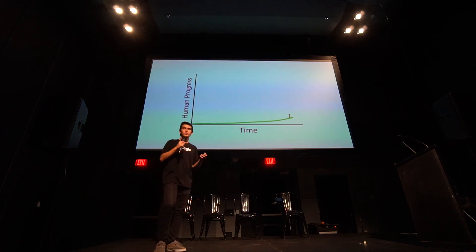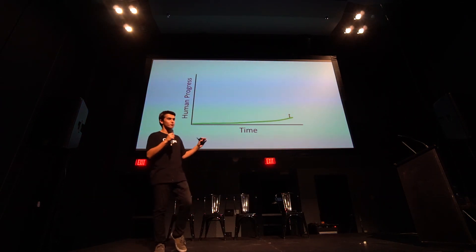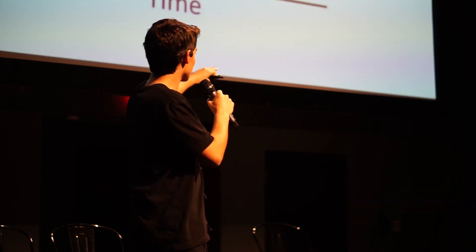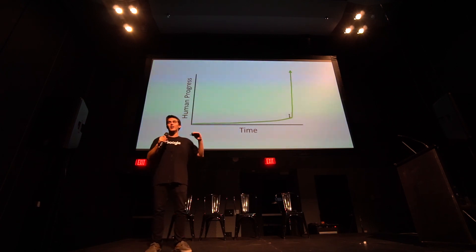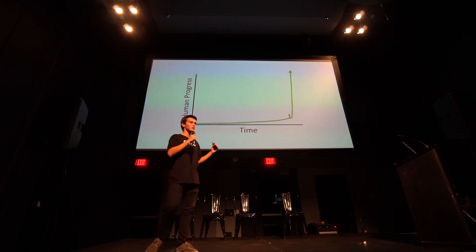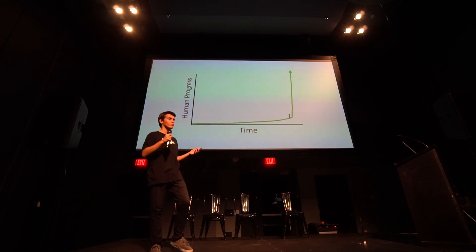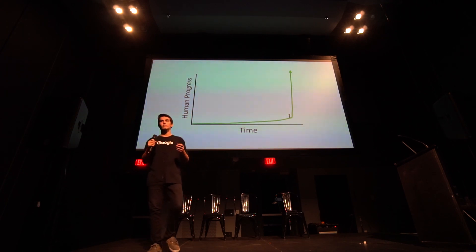The last thing I want to leave you with is this picture right here. While I talked about some cool technologies in computer vision, I really want you to take away the magnitude of the changes that are about to happen in the next five to 20 years. Here's what human progress over time looks like right now — and what's about to happen is this. You should be excited and absolutely terrified at what's about to explode in the next five to 15 years as all this stuff converges and creates technology we never could have imagined before. Thank you.